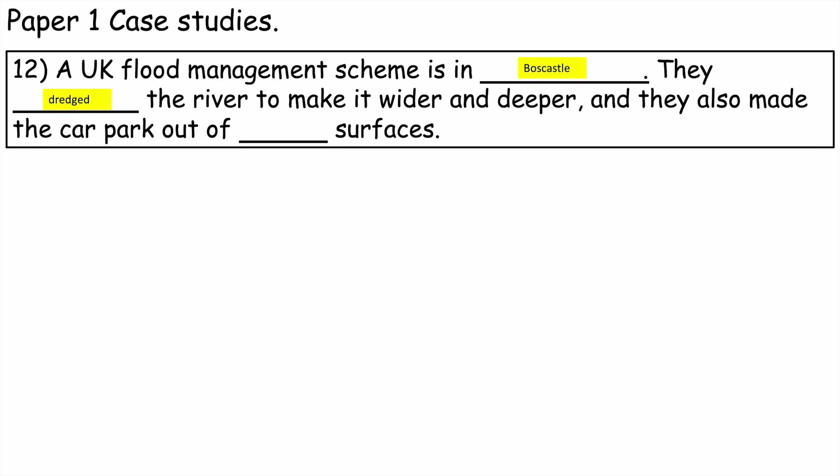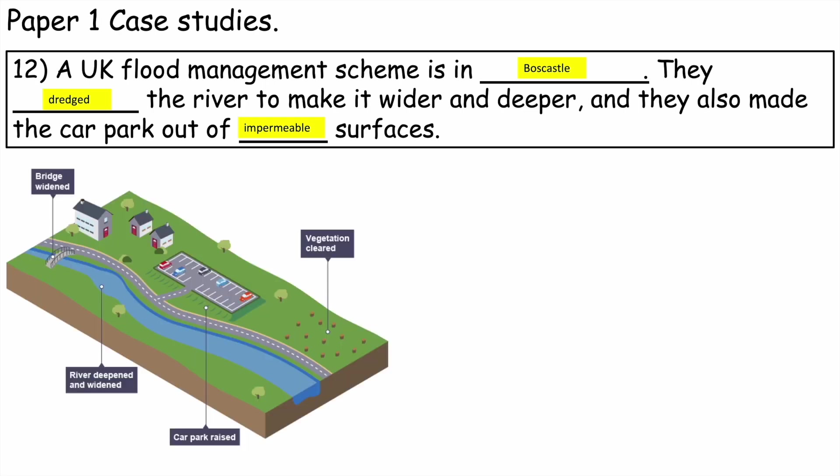At Boscastle, they dredged the river to make it wider and deeper — imagine scraping away everything on the river banks and the riverbed. They also made the car park out of permeable surfaces to ensure that water can soak through, which increases lag time. Note: I've put the word 'impermeable' on screen — that is wrong, it should be permeable. And there's a beautiful image of Boscastle.